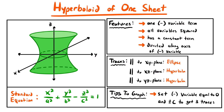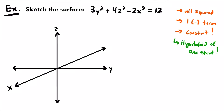We have 3 squared variable terms, one of them is negative, and we have a constant in the equation — these are the 3 things you'd expect to see in an equation representing a hyperboloid of 1 sheet. When all your variables are squared and only one of them is negative and you have a constant, it's always a hyperboloid of 1 sheet. If there were 2 negative terms instead of 1, you would have a hyperboloid of 2 sheets.